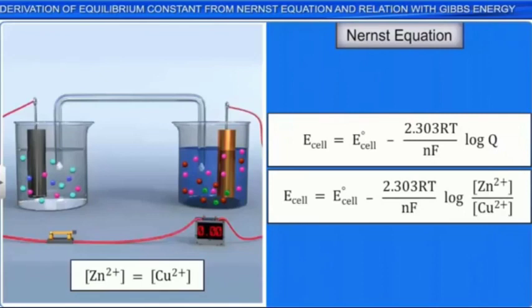At one stage, the concentrations of both the ions become equal. This indicates that the reaction will reach equilibrium, and the voltmeter will reach zero.